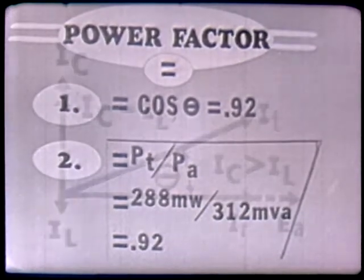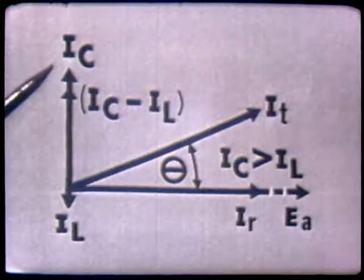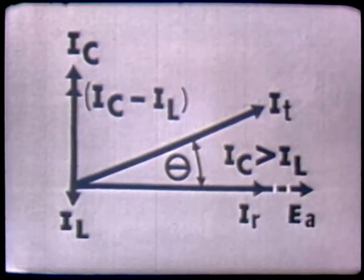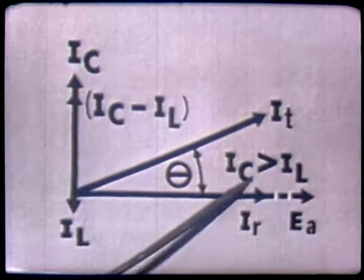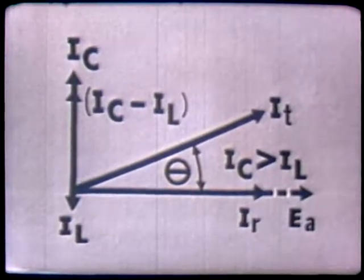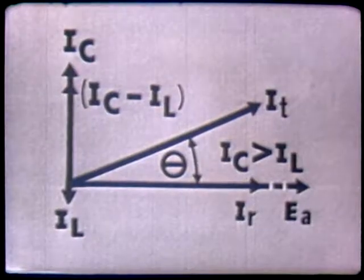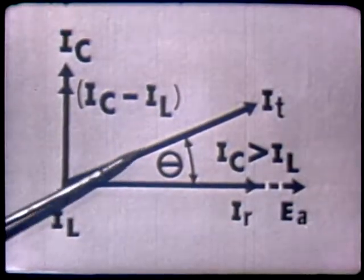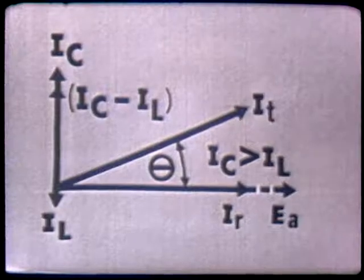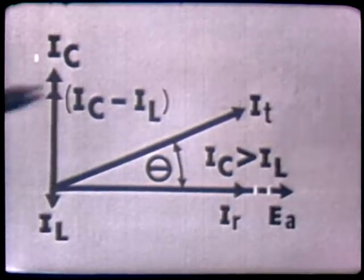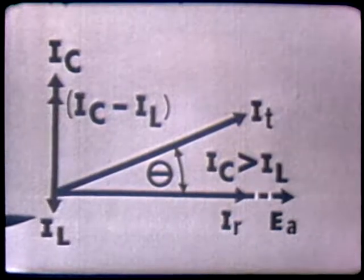Throughout this lesson I have been using a circuit where IC is greater in magnitude than IL. In this case, our total current leads our applied voltage by the phase angle, and the circuit is acting capacitively because we have a leading phase angle. But suppose we want the circuit to go from a leading phase angle to a lagging phase angle. For this to occur, IL would have to be greater in magnitude than IC. What circuit change could cause this?